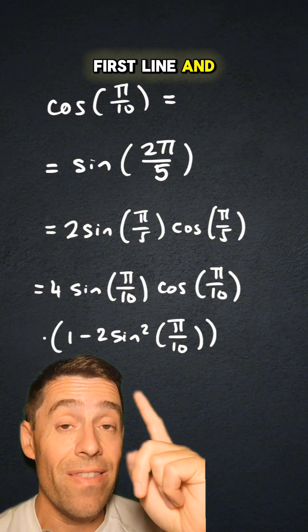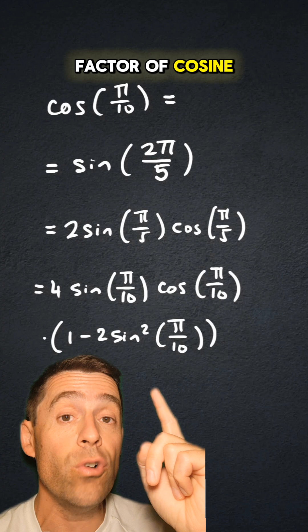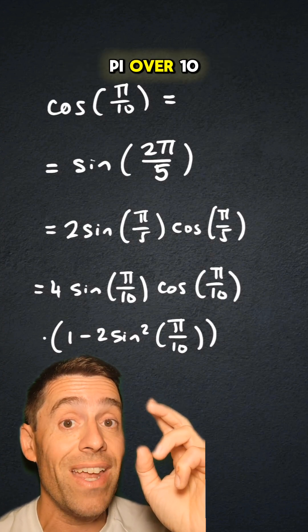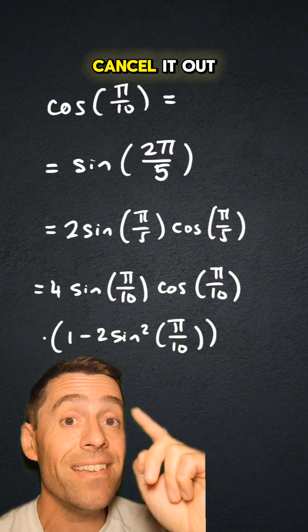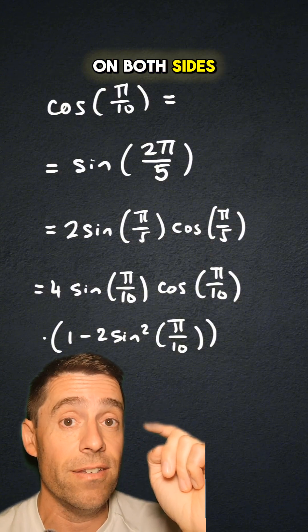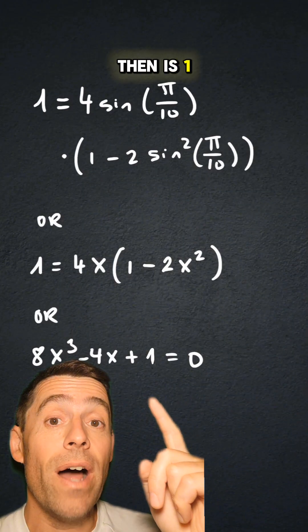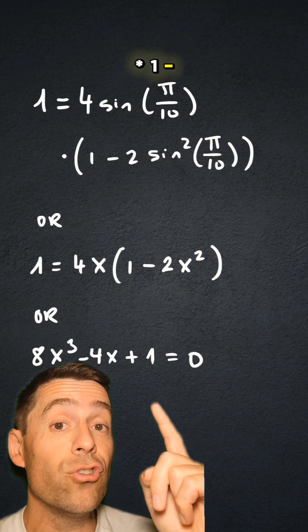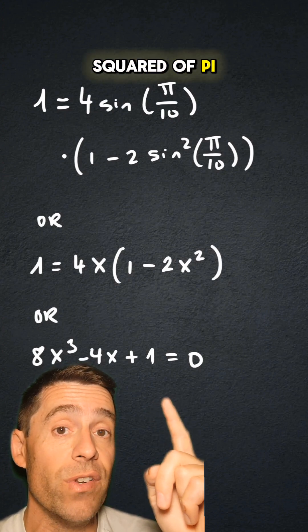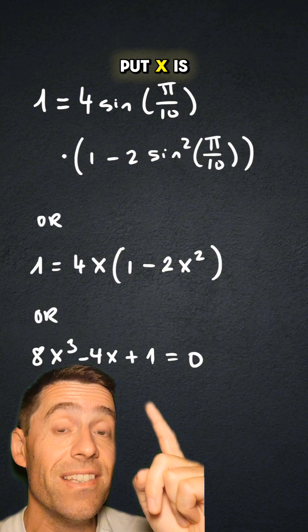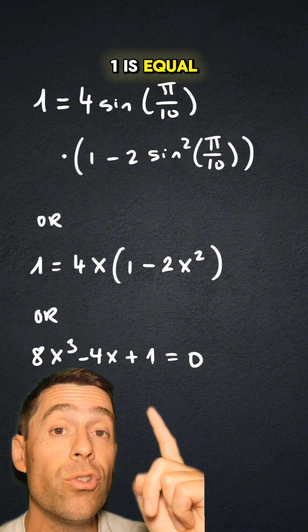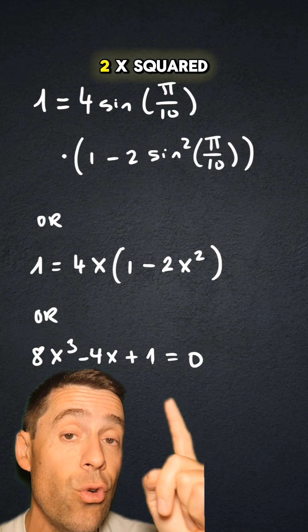Now, if you look at the first line and the last line, there is a factor of cosine of π/10 on both sides of the equation, and cosine of π/10 is non-zero, so I can cancel it out on both sides. What I get then is 1 equals 4 sine π/10 times 1 minus 2 times sine squared of π/10. And if I put x equals sine of π/10, that equation reads 1 equals 4x times 1 minus 2x squared.